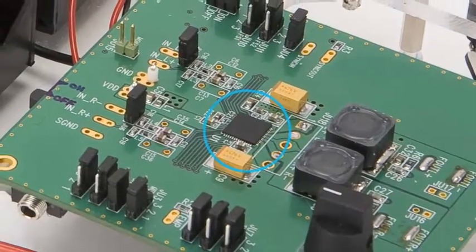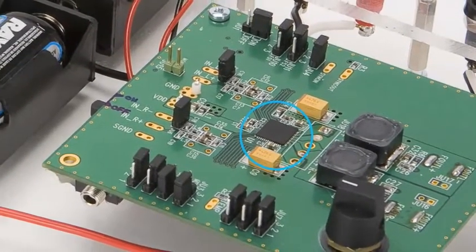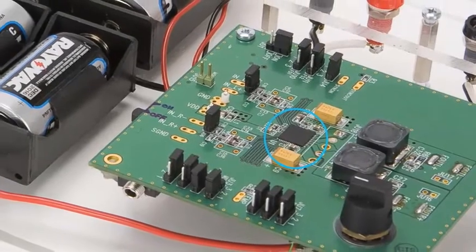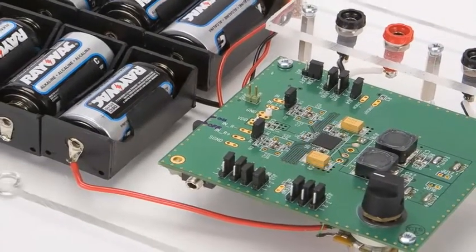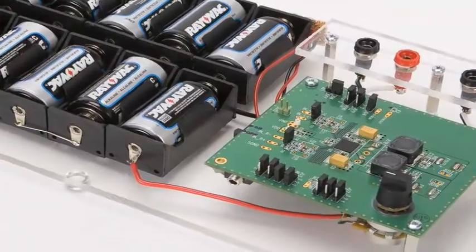This is a current best in class class D amplifier capable of reproducing 50 watt peaks per channel. Class D amplifiers are commonly thought to be about 90% efficient. Let's test that.